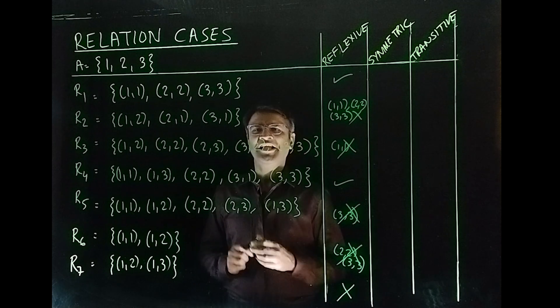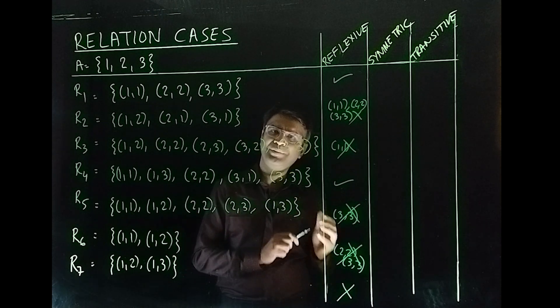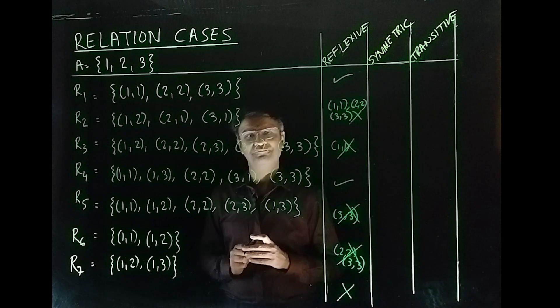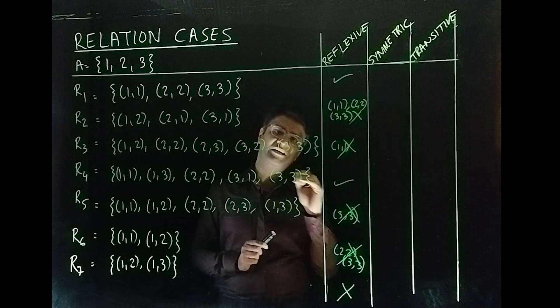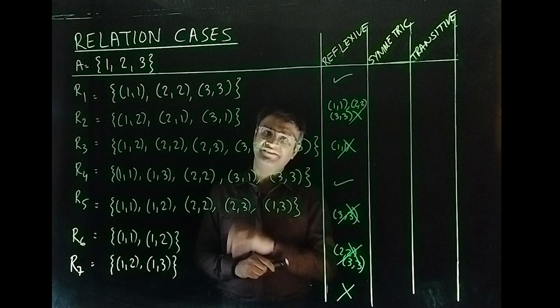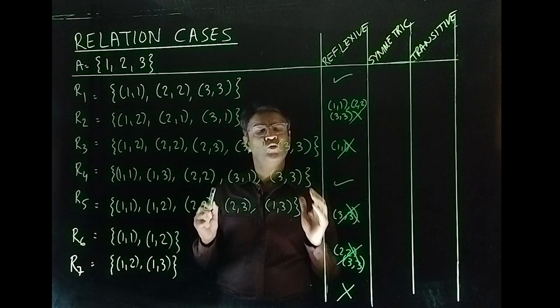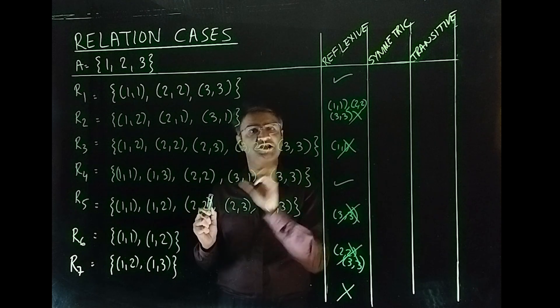What is symmetric? If A is related to B, B is related to A in the same way. Which means, if X is related to Y, Y will be related to X. Which means, you will get 2 sets of ordered pairs,